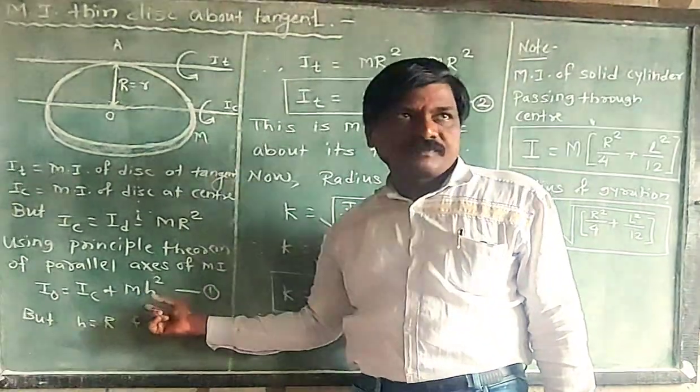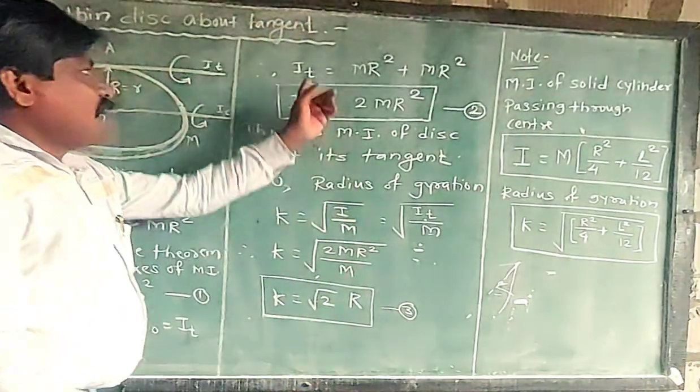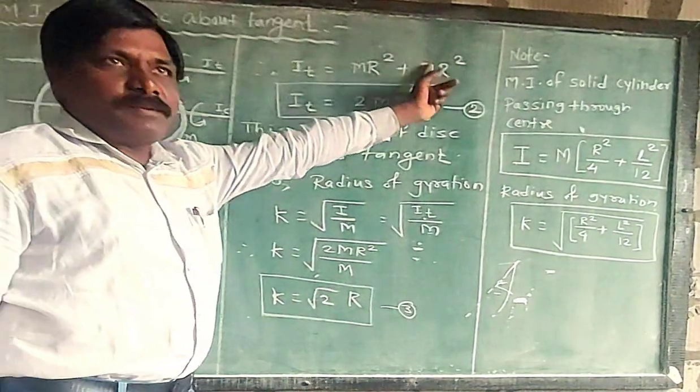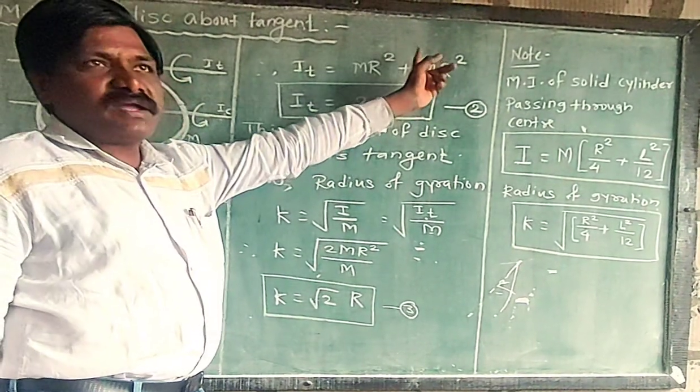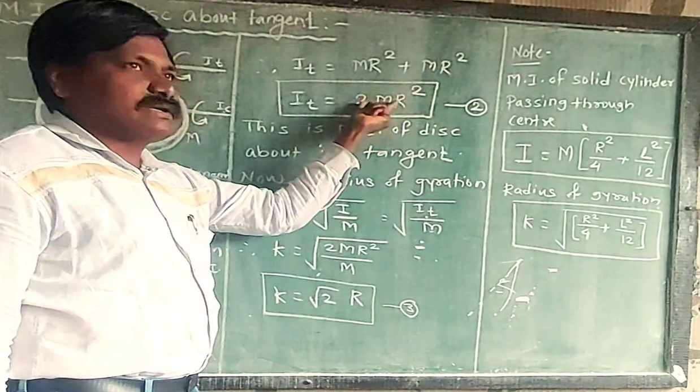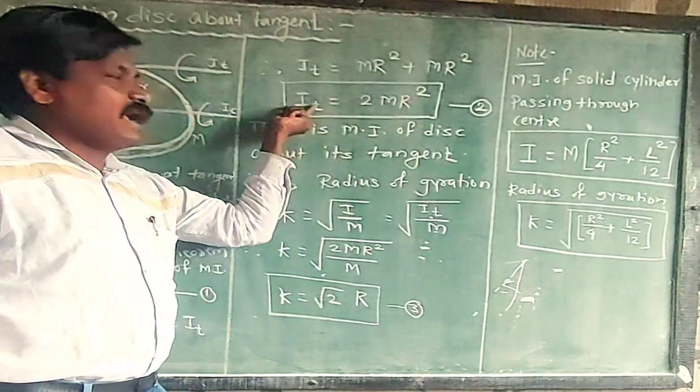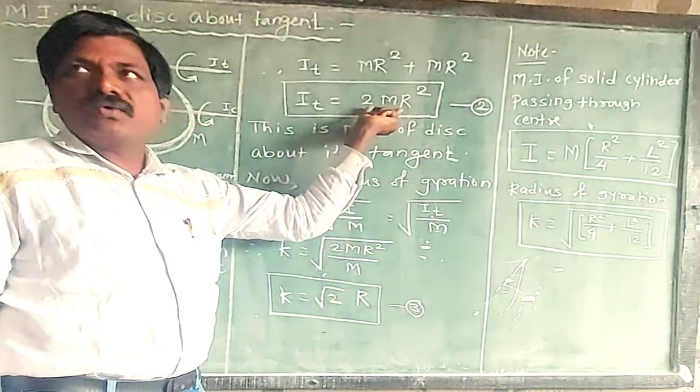Now put the values in the equation. What do you get? I_T is equal to MR square plus MR square. That is 1/2 MR square plus 1 MR square. It is equal to 3/2 MR square. So I_T is equal to formula 3/2 MR square.